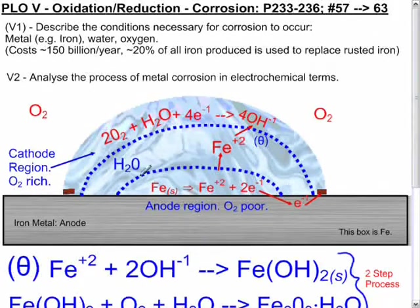Down here in the middle of the water droplet we have the oxygen-poor region. In this region, iron solid reacts to produce iron plus two and gives off electrons. So this is the anode region where oxidation takes place.